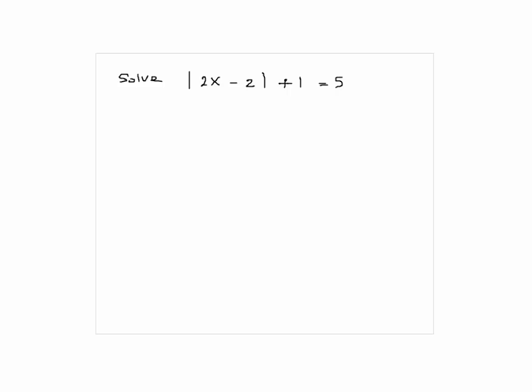Very good. The first step is to subtract 1. You want to isolate the absolute value, that's the first thing you want to do. So that would be absolute value of 2X minus 2 equal to 4.